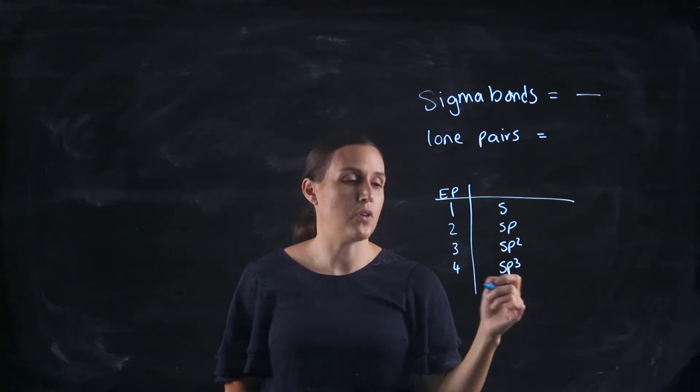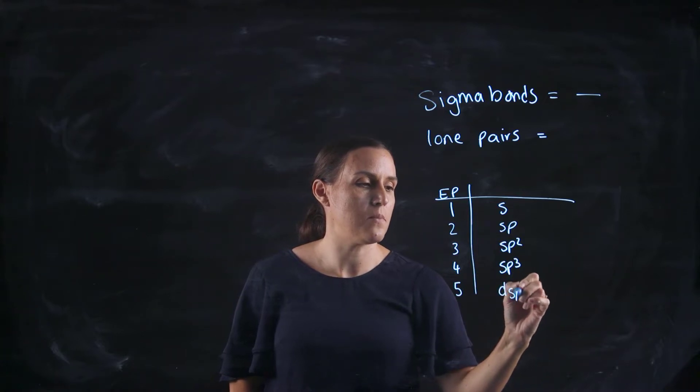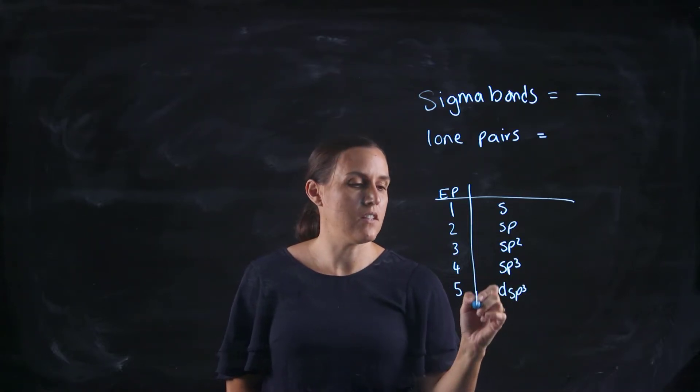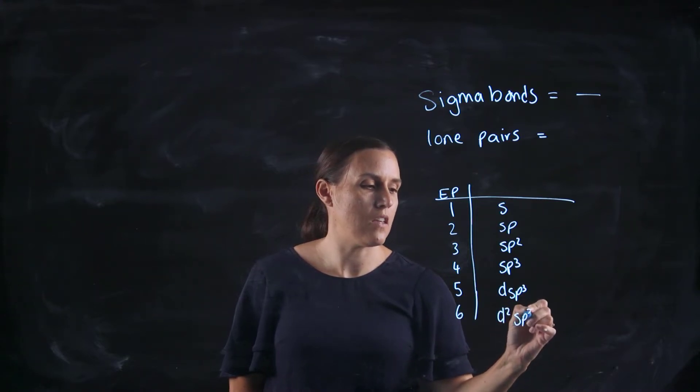I'm adding an extra orbital every time. So 5, I need to add another one, so it's going to be dsp3. We write the lowercase d at the front, and 6 would be d2sp3.